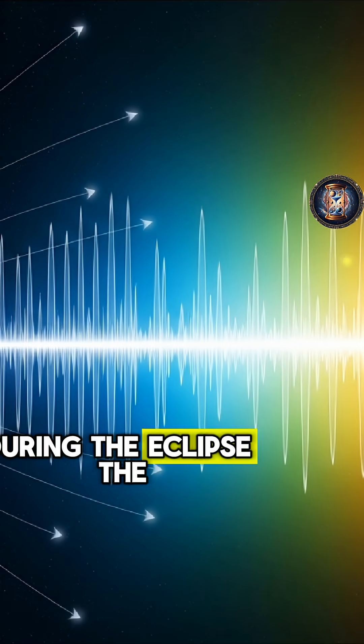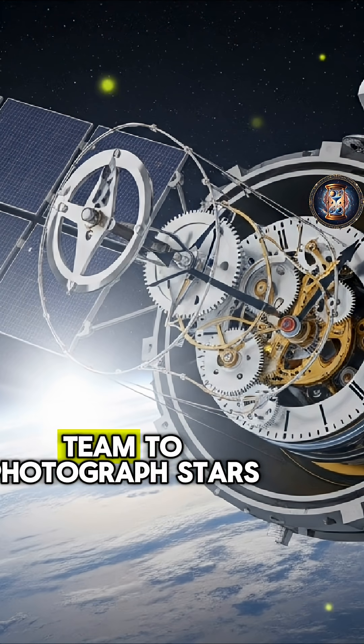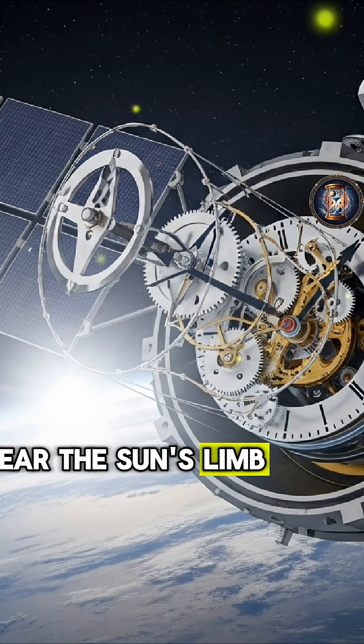During the eclipse, the sun's dazzling light was obscured, allowing Eddington and his team to photograph stars near the sun's limb.